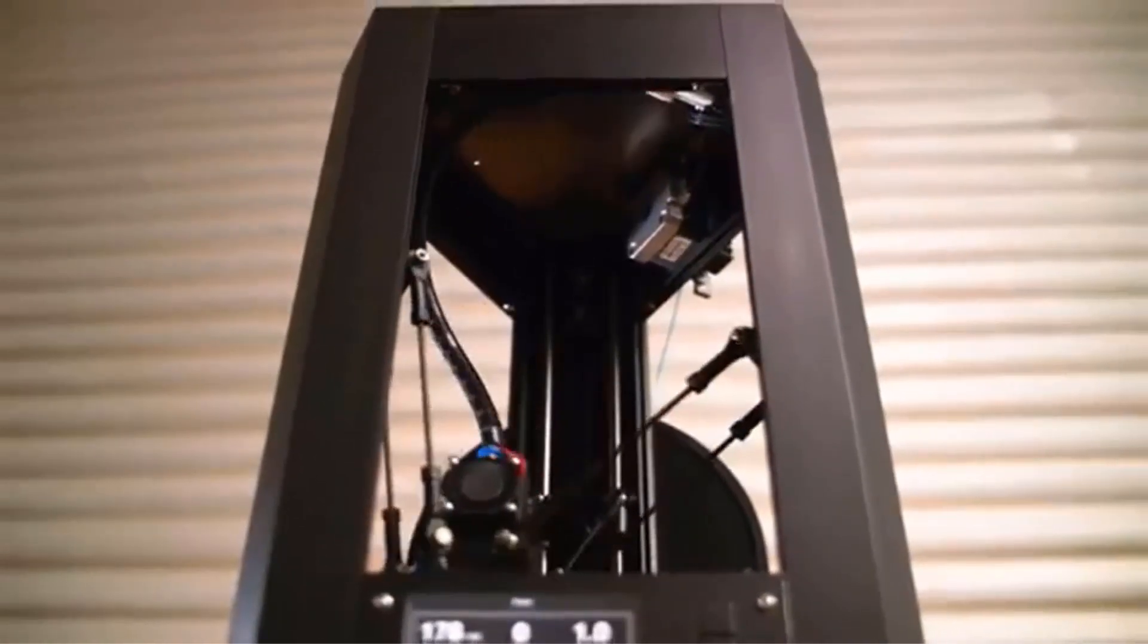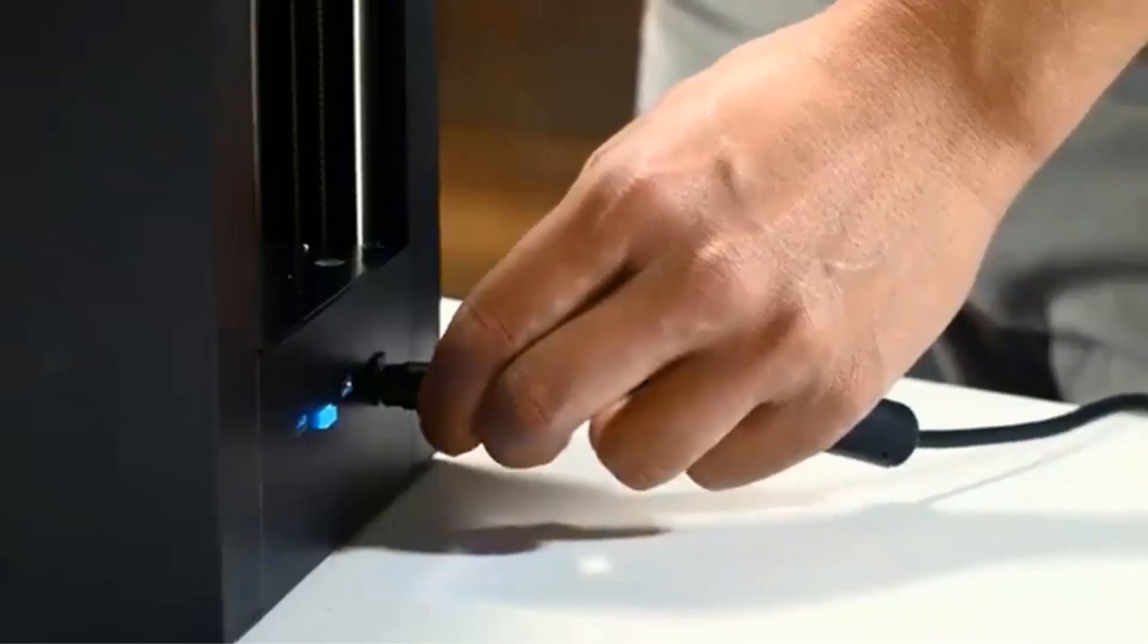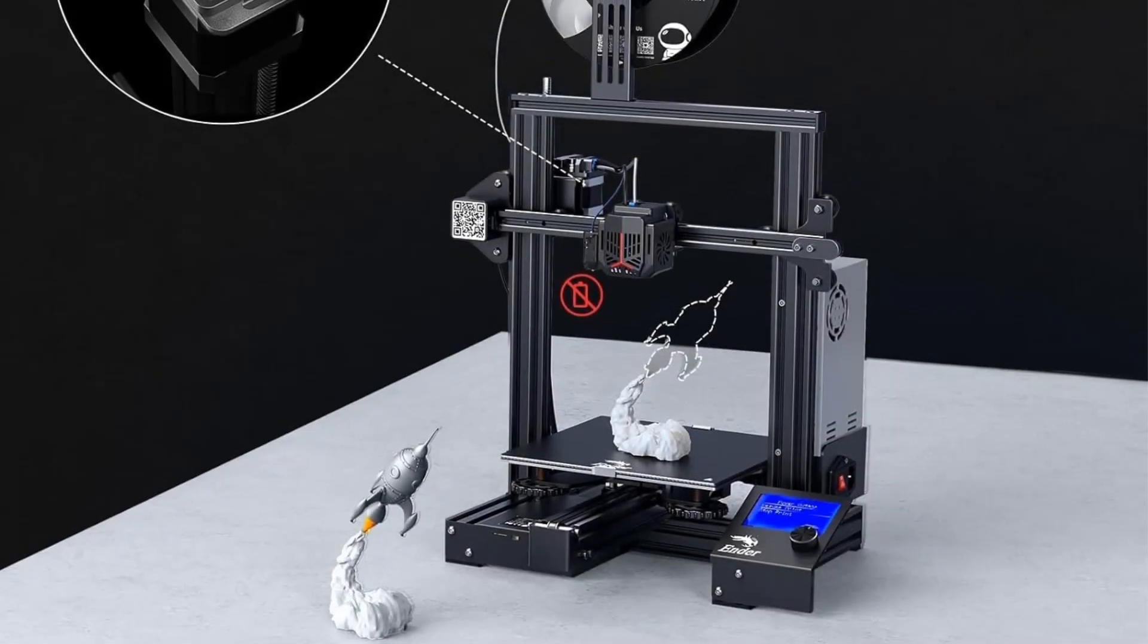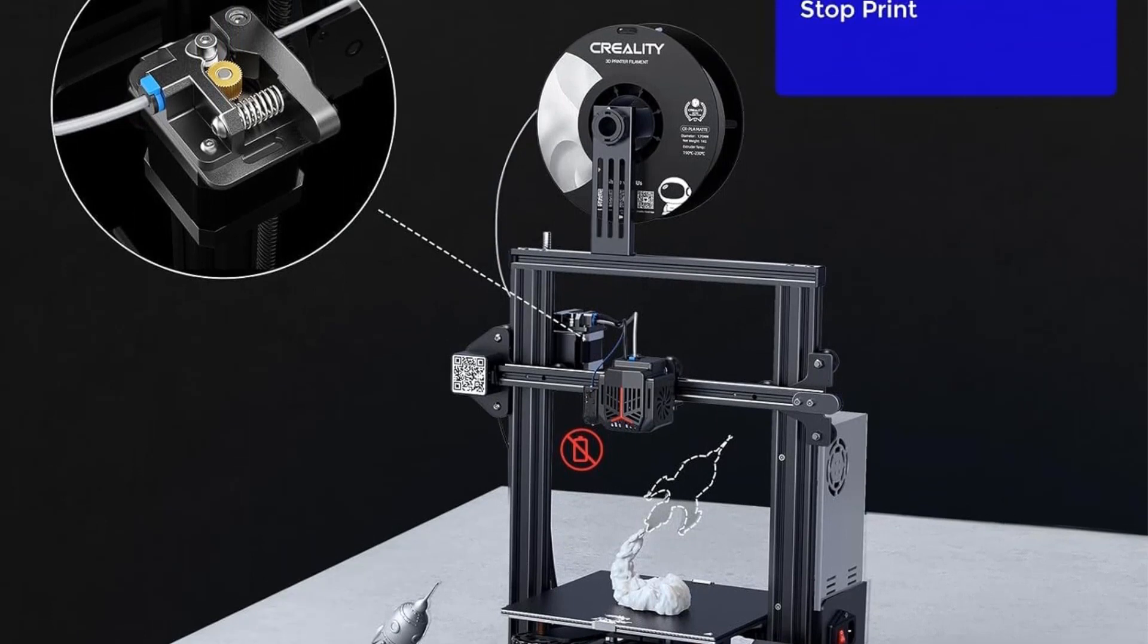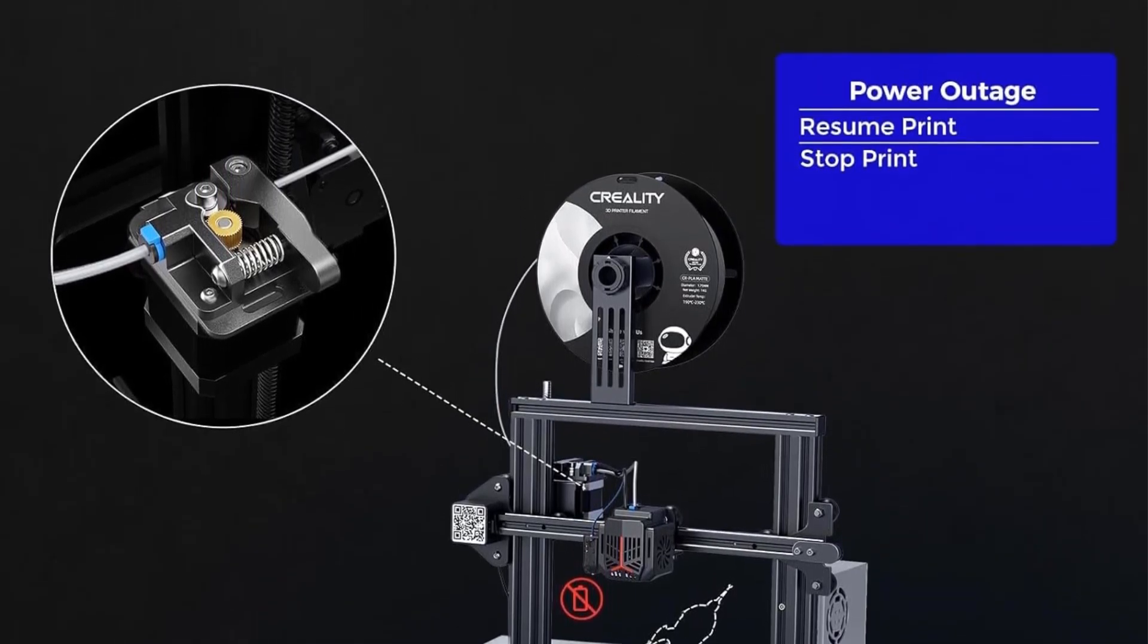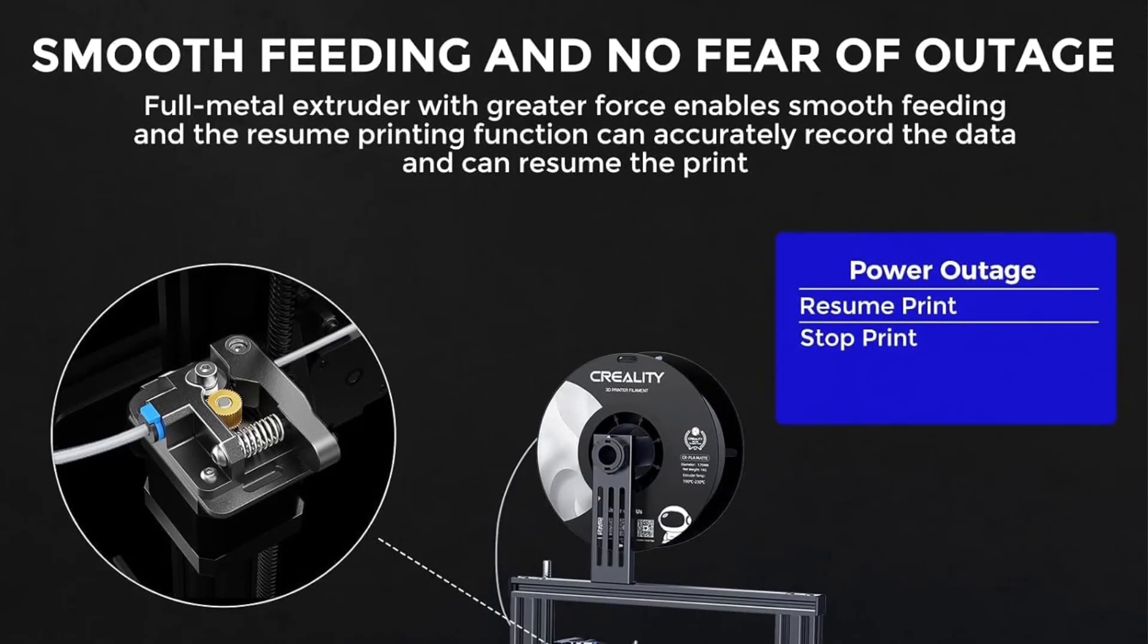The Ender 3 Neo is equipped with a 32-bit silent mainboard, providing a quieter operation below 50 dB. This silent mainboard also offers stronger anti-interference capabilities, ensuring faster and more stable performance without causing disruptions to your study or work environment.